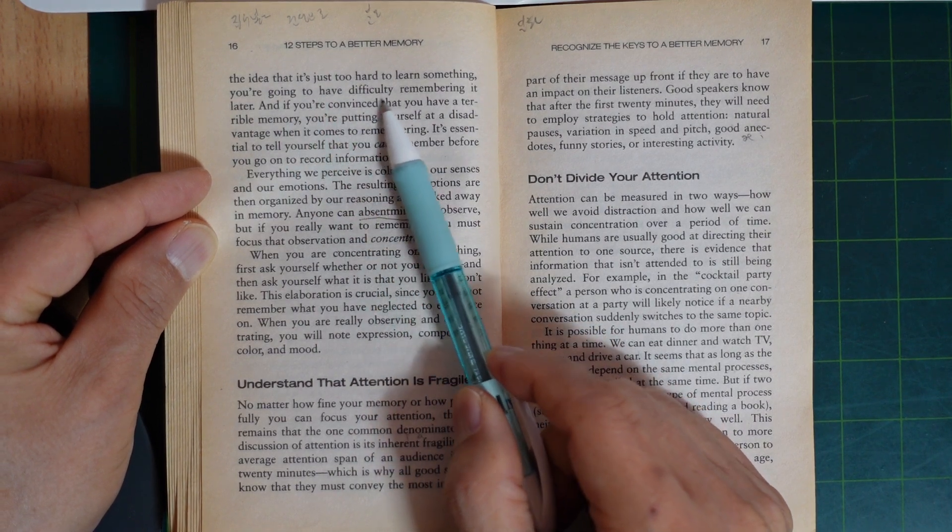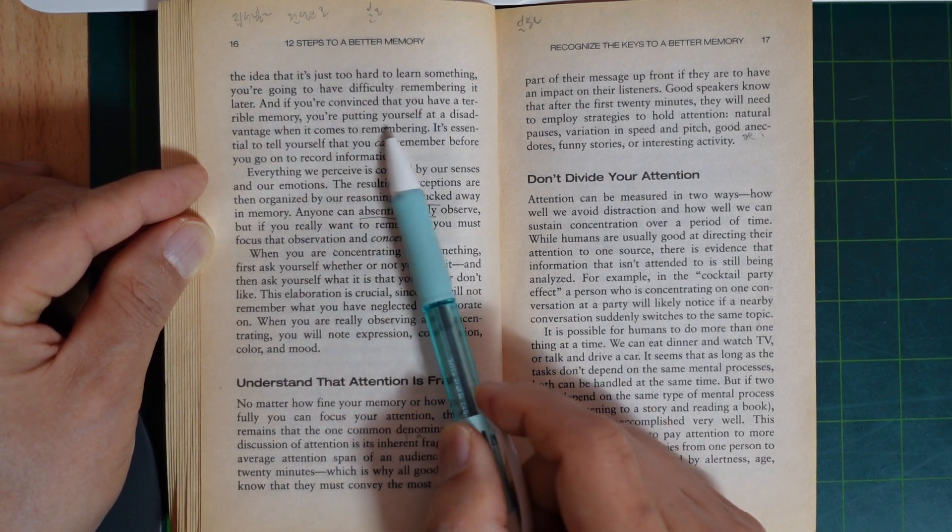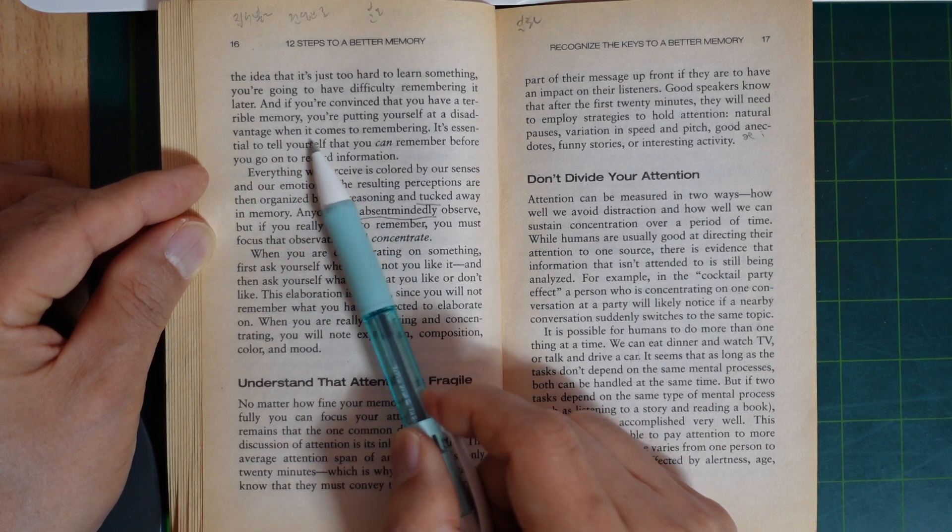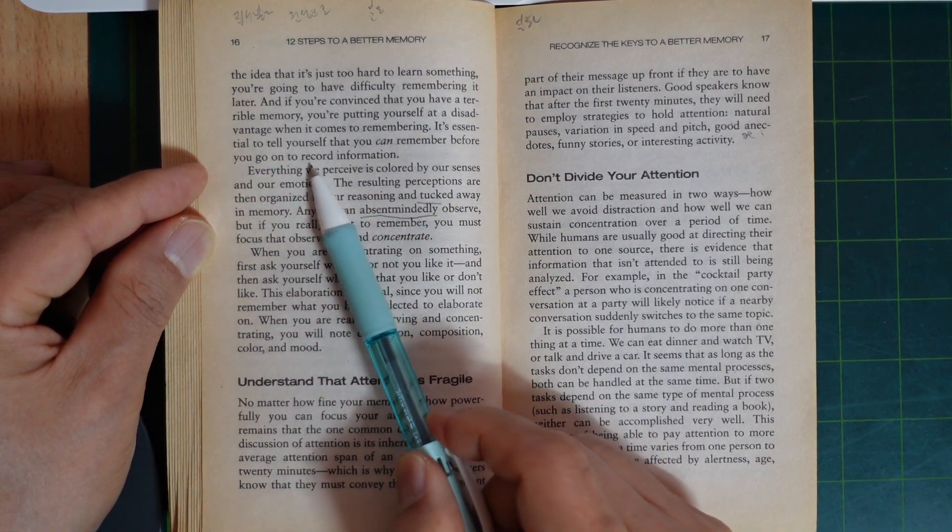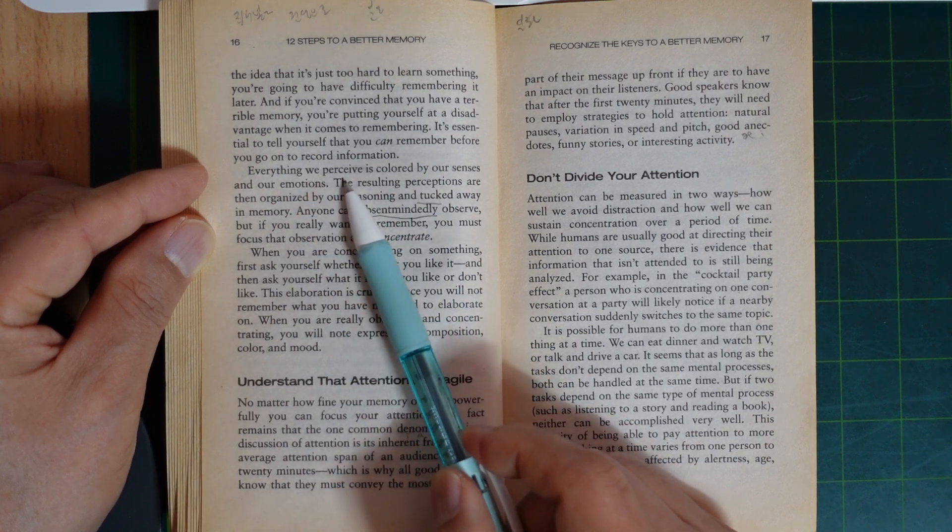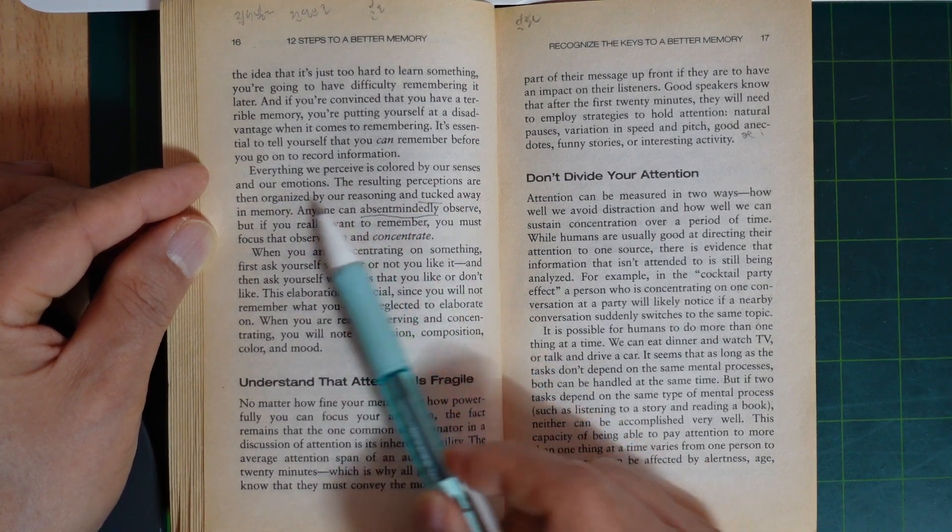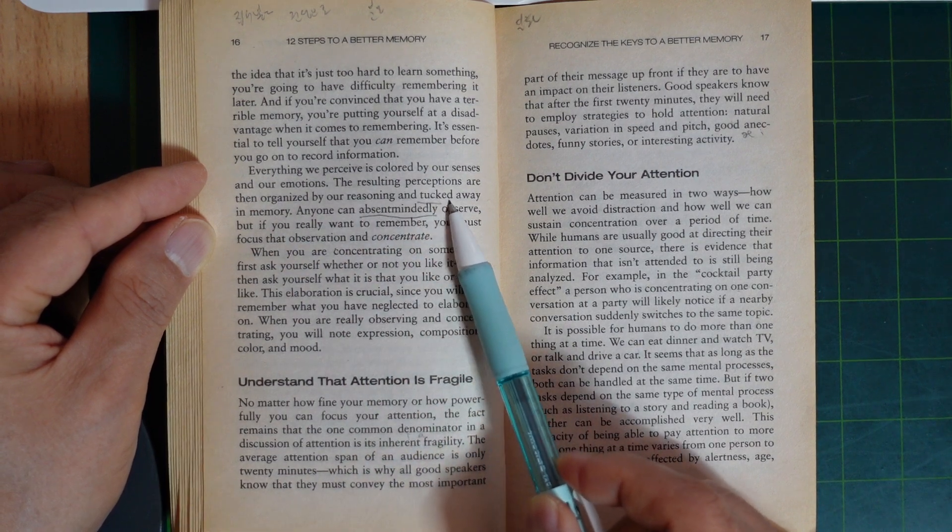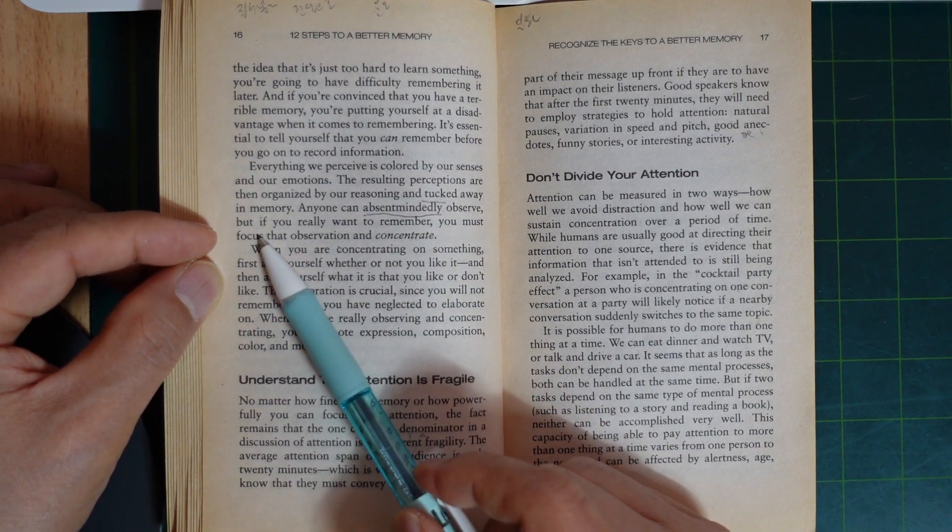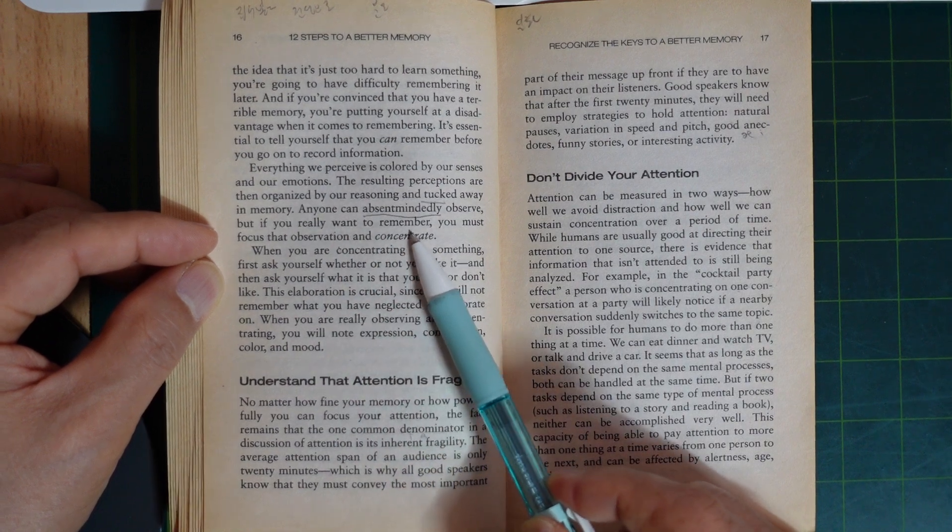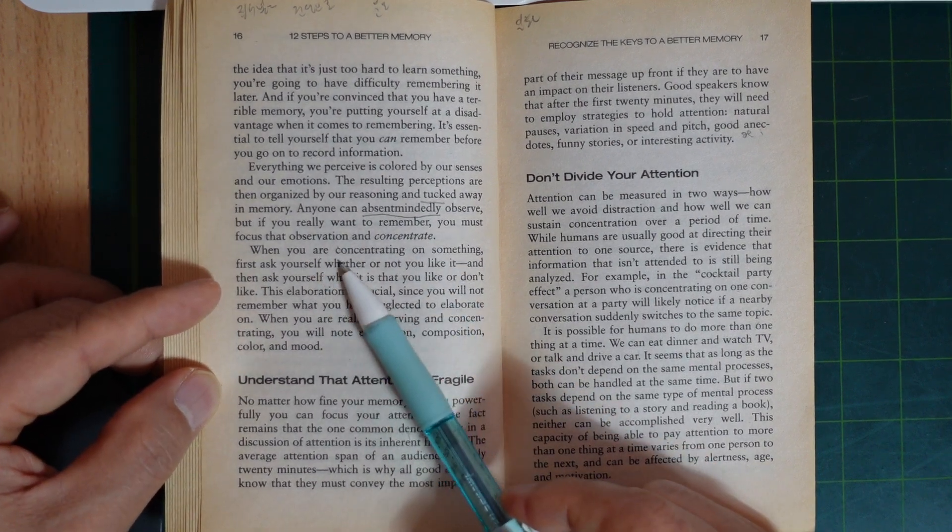If you start with the idea that it is just too hard to learn something, you are going to have difficulty remembering later. And if you are convinced that you have a terrible memory, you are putting yourself at a disadvantage when it comes to remembering. It is essential to tell yourself that you can remember before you go on to record information. Everything we perceive is colored by our senses and our emotions. The resulting perceptions are then organized by our reasoning and tucked away in memory. One cannot absent-mindedly observe, but if you really want to remember, you must focus the observation and concentrate.